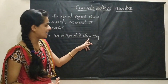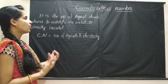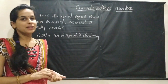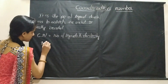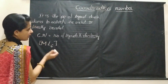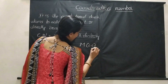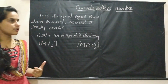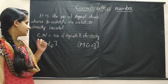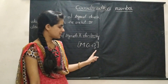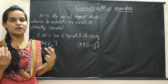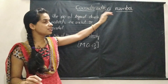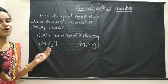If you have any doubt about denticity, ligands, or coordination entities, please watch my previous videos. To explain coordination number, let me consider two coordination complexes: ML6 and M(LL)3. If you are asked to calculate the coordination number for these two complexes and you answer 6 and 3 respectively, then that is completely wrong.